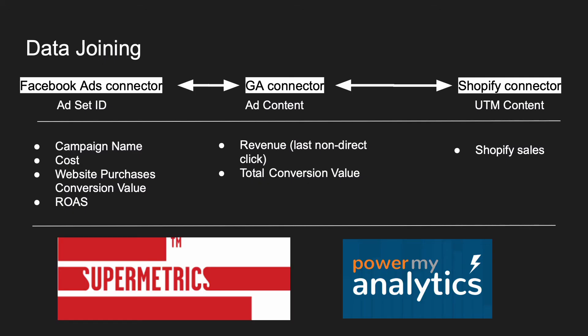Then we need to join data in Google Data Studio. The joining key will be ad set ID. We need to choose some metrics from Facebook ads: campaign name, cost, website conversions, website purchases conversion value, and return on ad spend.